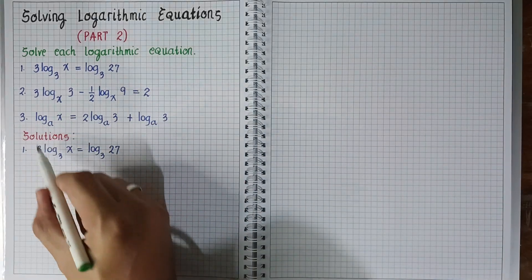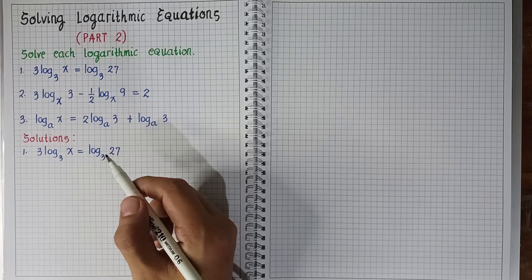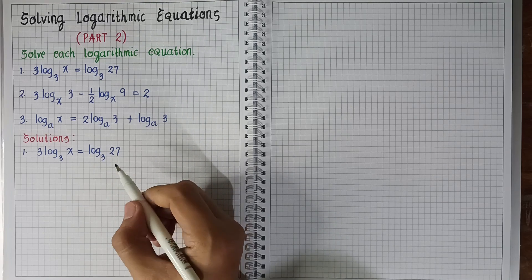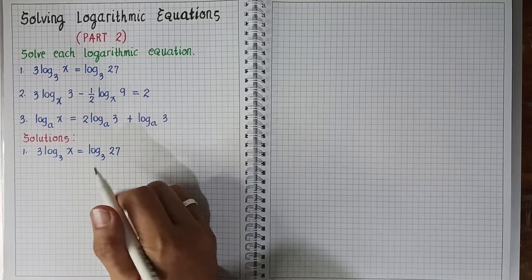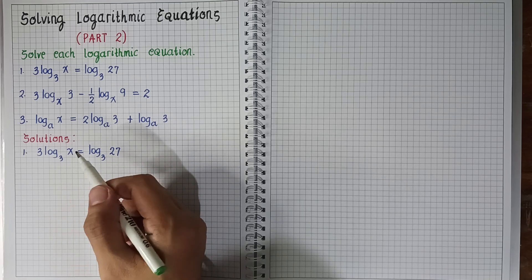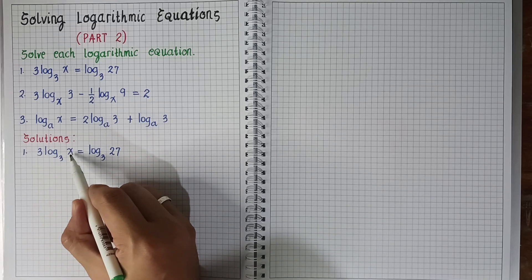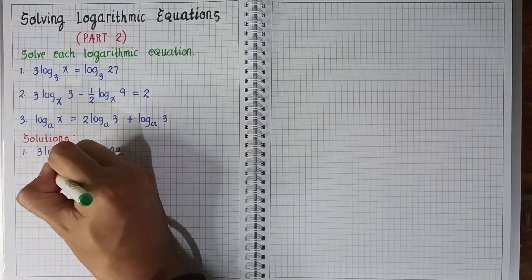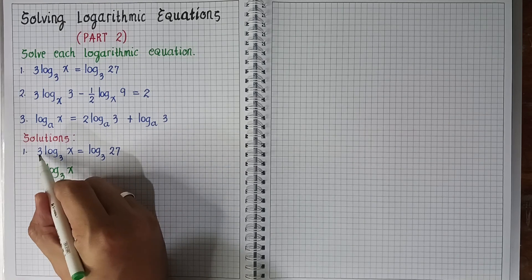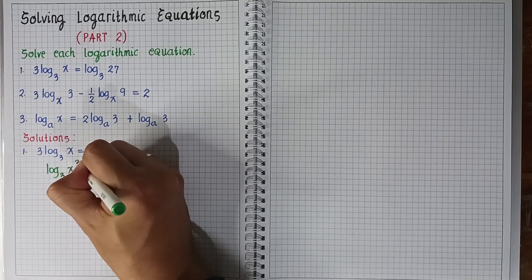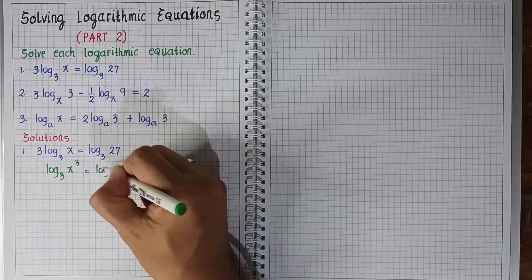So number one: 3 times logarithm of x with base 3 is equal to logarithm of 27 to the base 3. So as mentioned in the previous video, if we need to use the different properties of logarithm, we apply them. So here, let's apply the power property of logarithms, because we have a numerical coefficient here. So the 3 becomes the exponent of the variable x. So just copy the logarithm of x with base 3, and then the 3 becomes the exponent — so it becomes log base 3 of x cubed. And then it is equal to logarithm of 27 with base 3.